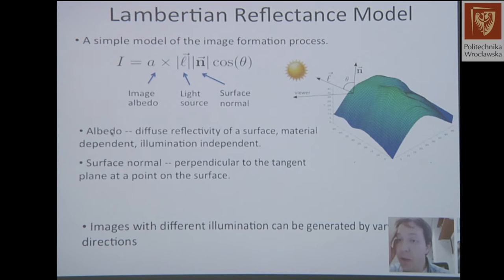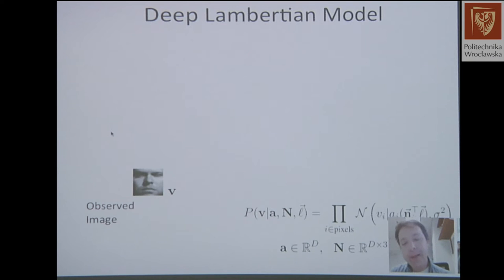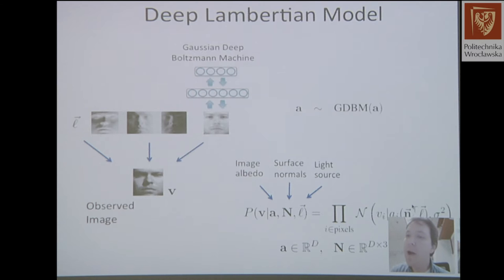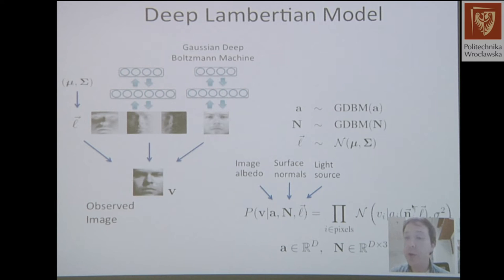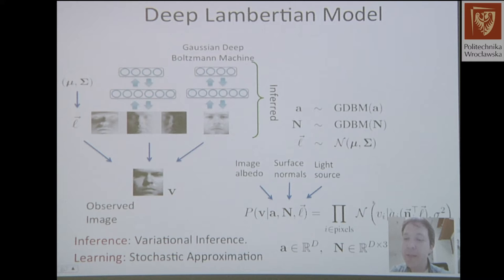This is the Lambertian model from the computer graphics community — a simple model of image formation. We have an image albedo, which is material-dependent but illumination-independent. There's a surface normal and a light source. Image formation is done by a dot product between these components. Images with different illuminations can be generated by varying the light direction. We incorporate this model as prior knowledge into the deep learning framework.